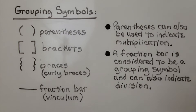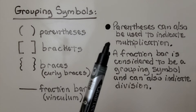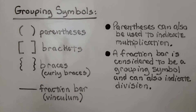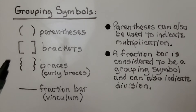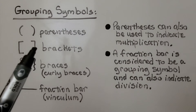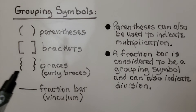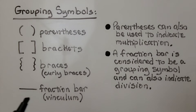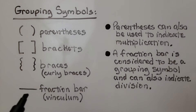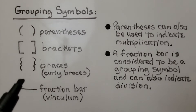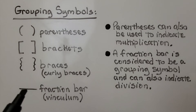We have parentheses, which can also be used to indicate multiplication — if a number or variable is right next to the parentheses, that means we're multiplying them. Same with brackets, which look like boxes. And we have braces, sometimes called curly braces, which are kind of wiggly. We also have the fraction bar, also called a vinculum, which is a grouping symbol that indicates division — whatever the numerator is, is divided by the denominator.